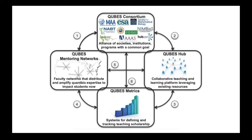Another pillar is CUBES metrics. This is a focus area because, as I mentioned, teaching scholarship is not rewarded very much in promotion and tenure. This wing of the CUBES proposal was about thinking about ways we can create a system to help faculty report back to their institutions on any kind of pedagogical work they do with us — to give them credit for their work and help them in their promotion and tenure.